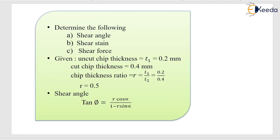We need to determine the shear angle, shear strain, and shear force. The uncut chip thickness t1 equals the feed, which is 0.2 mm. The cut chip thickness (deformed chip thickness) t2 is 0.4 mm. From this, the chip thickness ratio r = t1/t2 = 0.5.